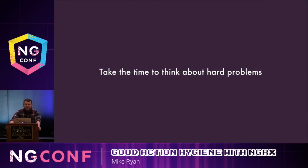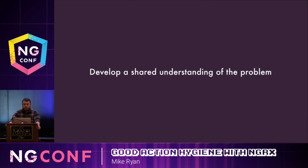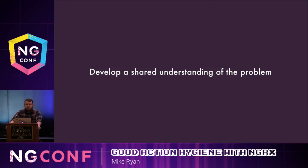The second benefit to writing actions first is it gives you time to think about hard problems. Even if your action list is incomplete or has obvious gaps, it's a great way to wrap your head around a feature — you're thinking about all the different interactions that happen within it. This will also help you be more discerning about the implementation, since it's much easier to think about the state of your application when you define all the events in it first. If you're on a team, it's going to help you develop a shared understanding of the problem with your teammates. Nothing will hurt your team's velocity more than finding out at the end of a project that you had different understandings of the problem, leading to incompatible implementations. By designing and writing the actions together as a group, you can help develop a shared understanding of how the feature works.